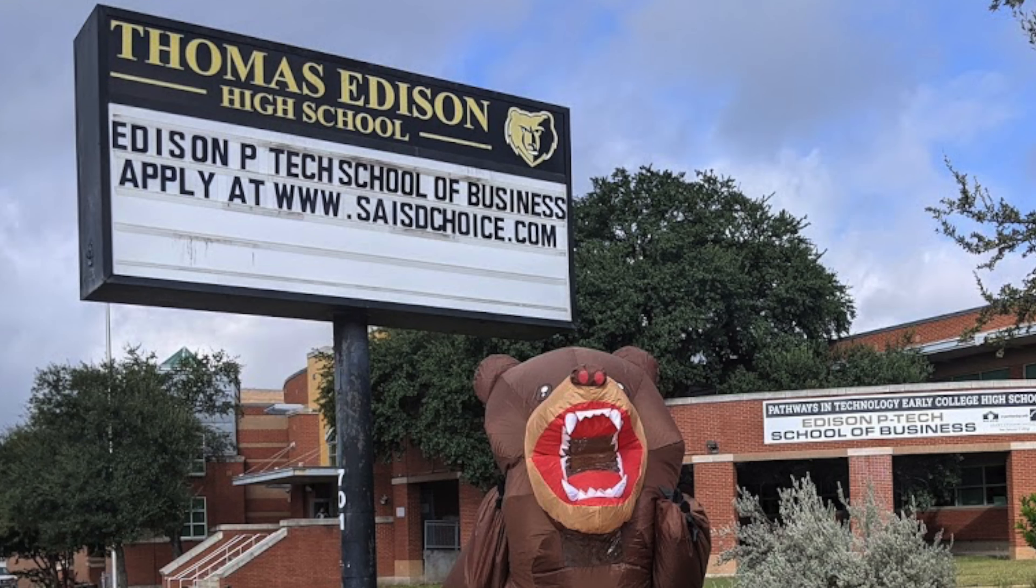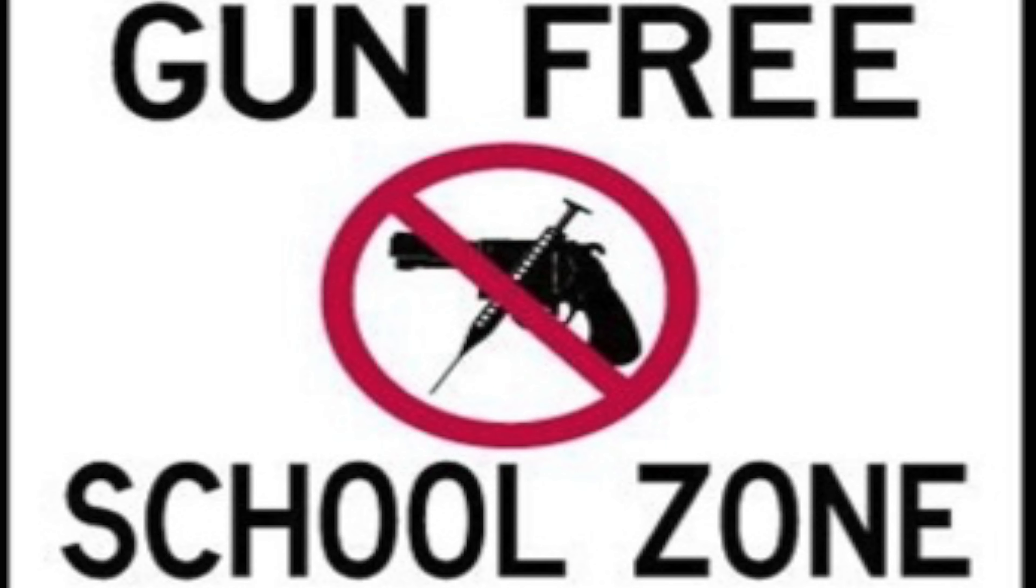Before we dive into the specifics of what happened to Alfonso Lopez Jr., a 12th grader at Edison High School in San Antonio, Texas on March 10, 1992, before Alfonso's life was turned upside down, we need to travel back two years earlier when Congress passed as part of the Crime Control Act of 1990, the Gun-Free School Zone Act of 1990.